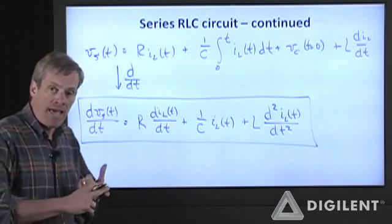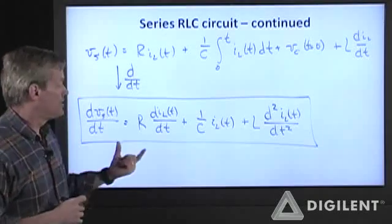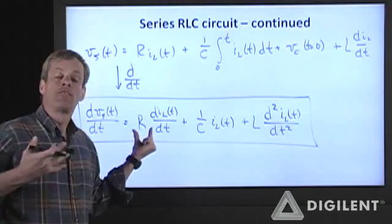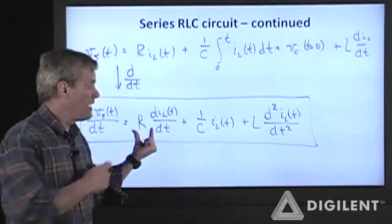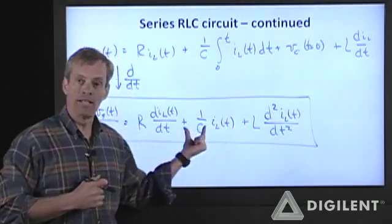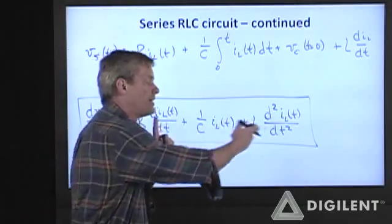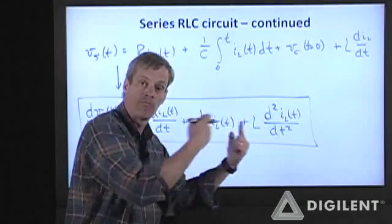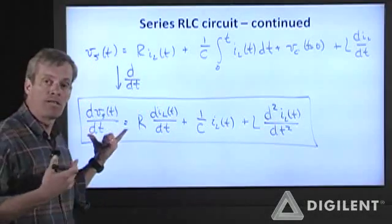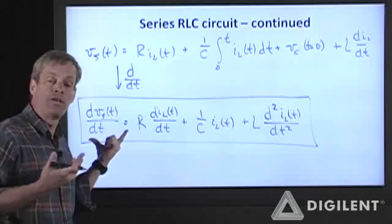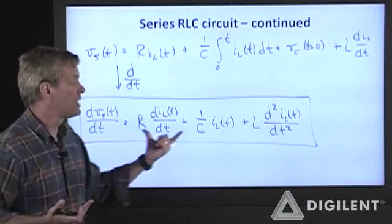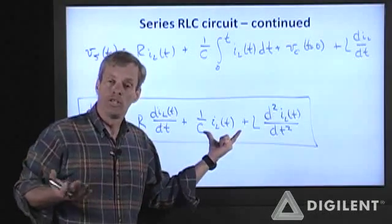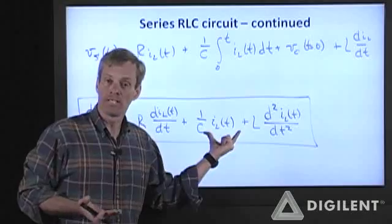The energy dissipation is induced by the resistor R. If the value of R is small enough relative to the values of L and C, the inductor and capacitor can trade energy back and forth. If I start this up from some initial current or initial voltage, the resulting currents or voltages in the system will oscillate with time.